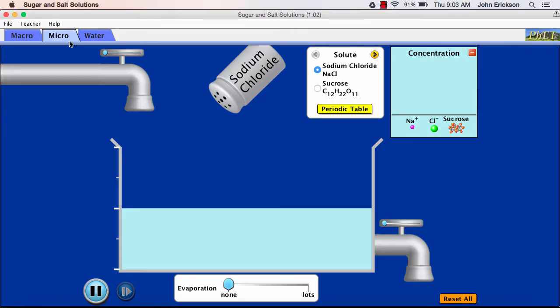So why does salt water carry electricity, but sugar water does not? What if we could see the tiny particles found in these solutions? What could they tell us about conductivity? This simulation can show us what we would see if we were as tiny as an atom.